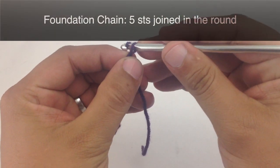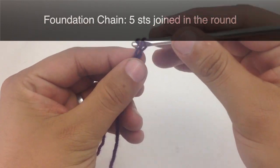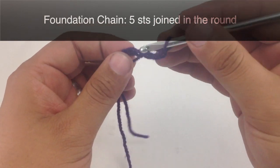To begin this stitch, you must create a foundation chain of 5 stitches. And then we're going to join these in the round with a slip stitch.